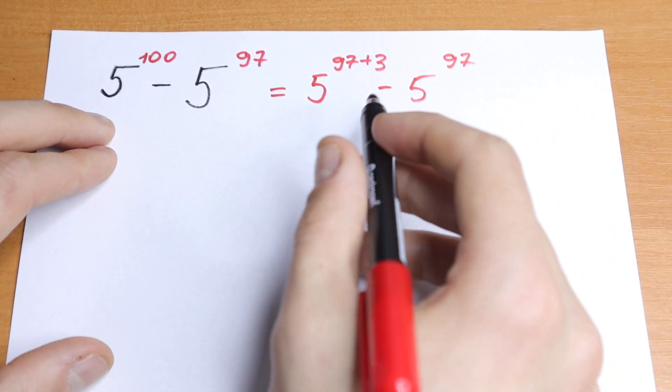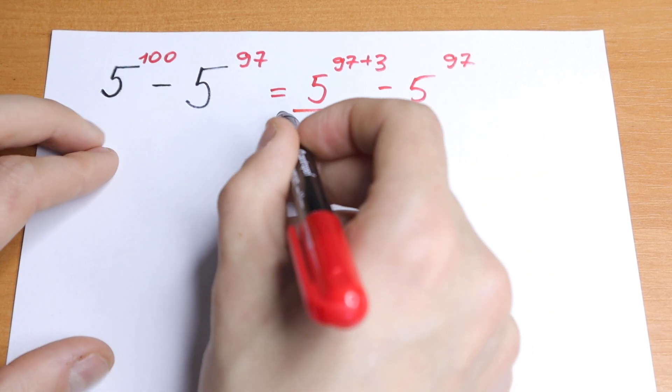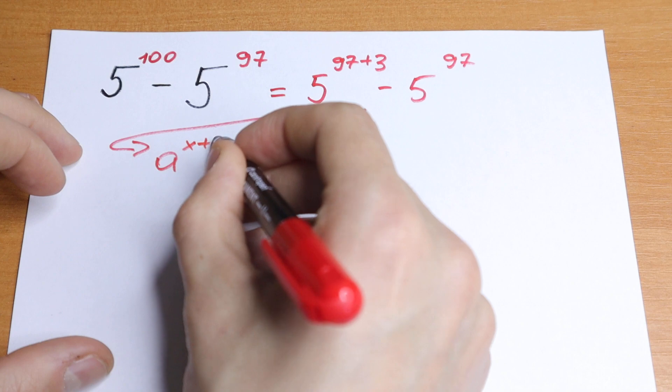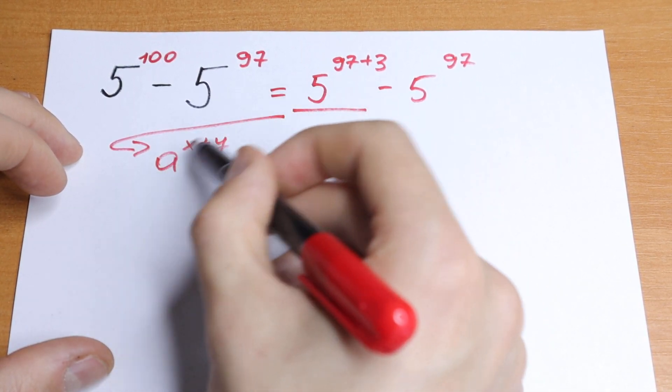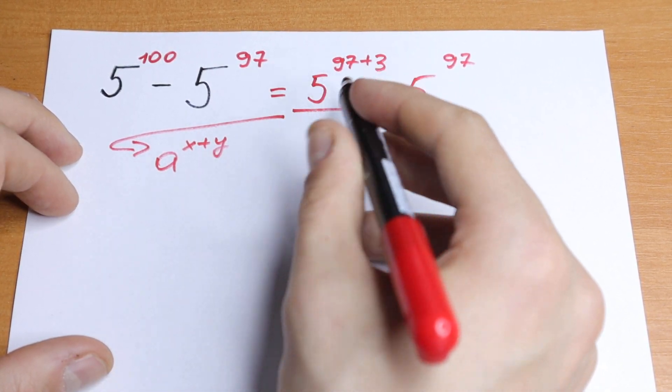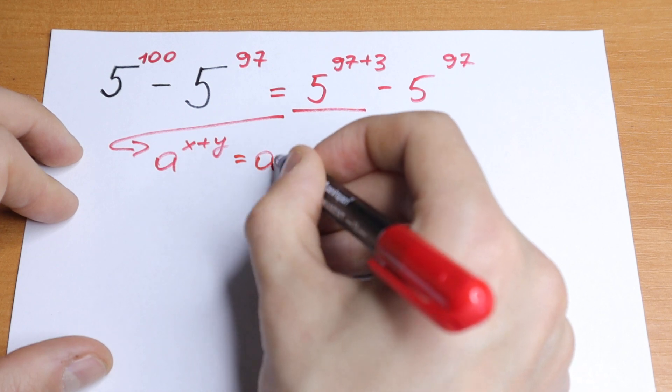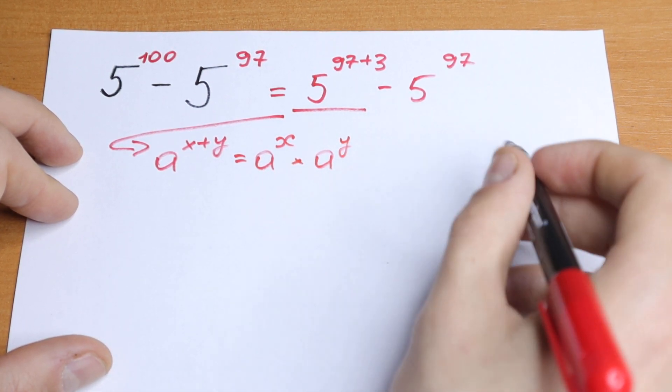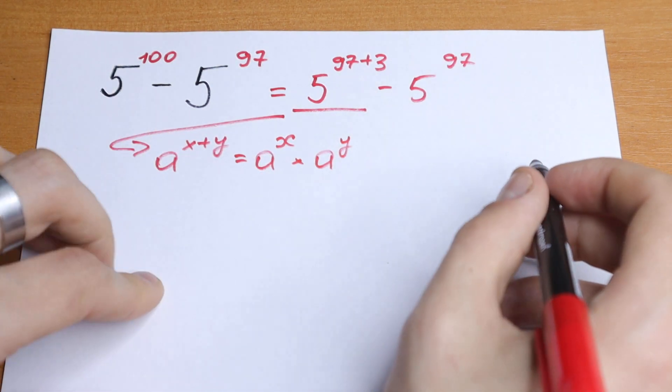Under this element I want to show you a rule. We have a to the power x plus y, so we have number a equals 5, and we have a sum in our power. As a result, we can write it as a to the power x times a to the power y. We can separate it using this rule.